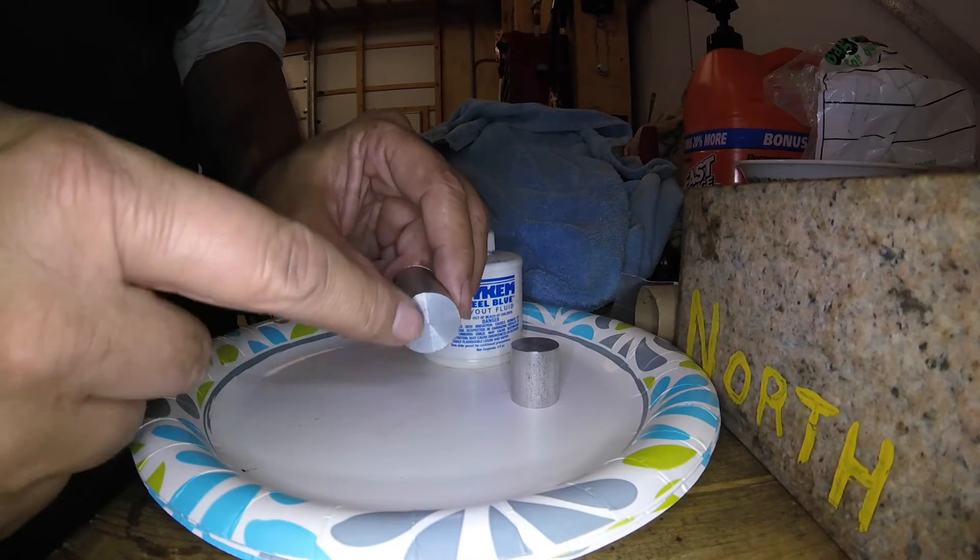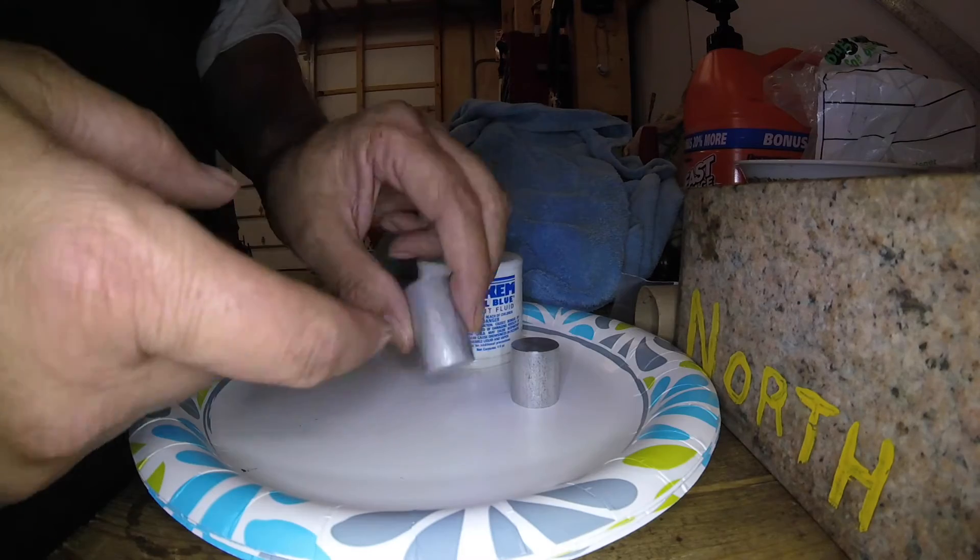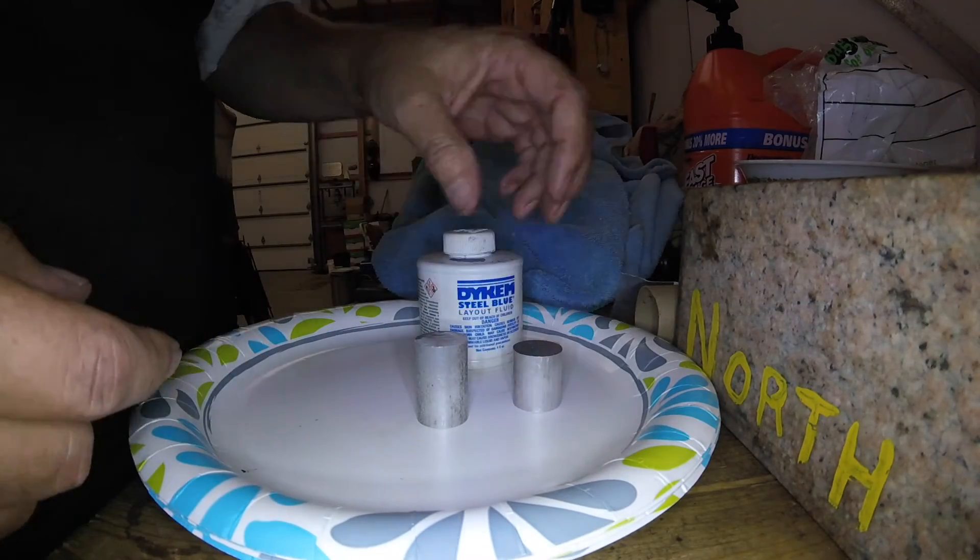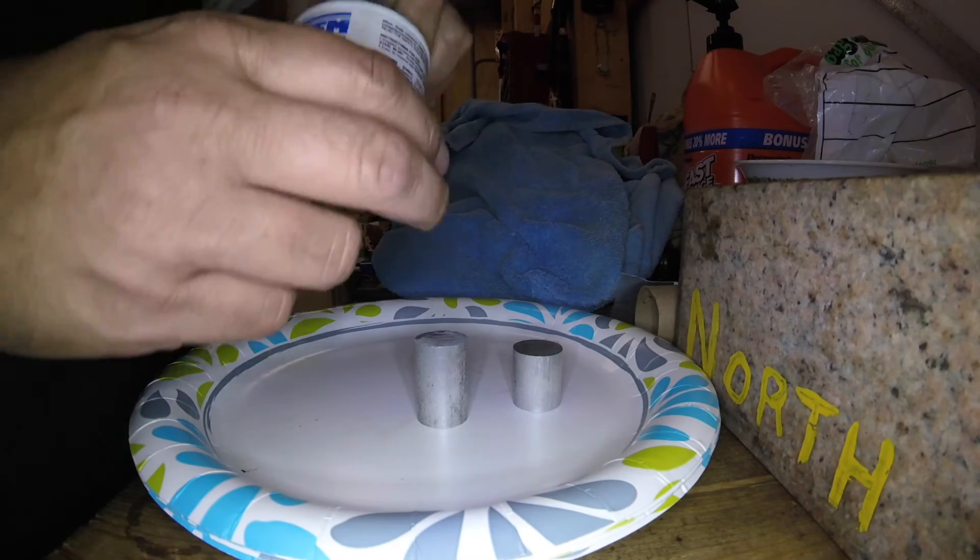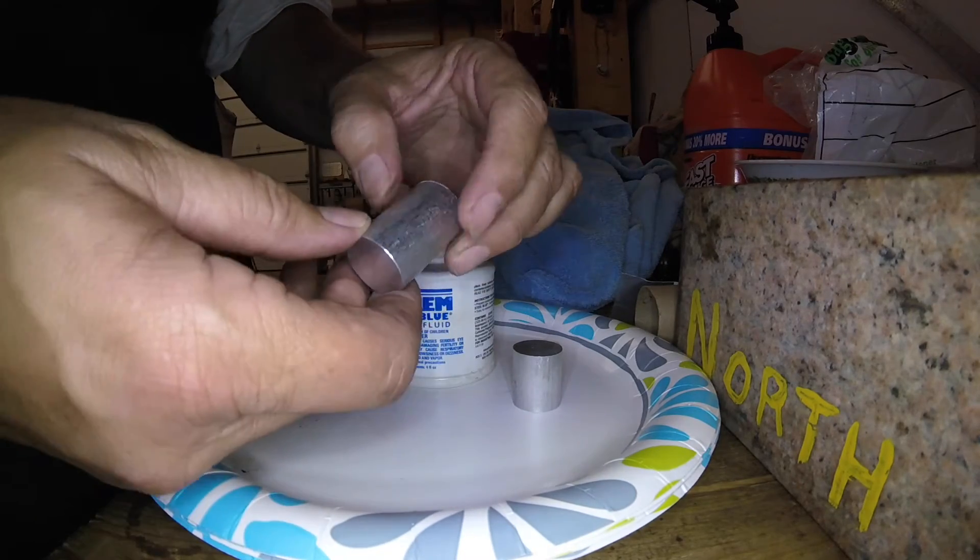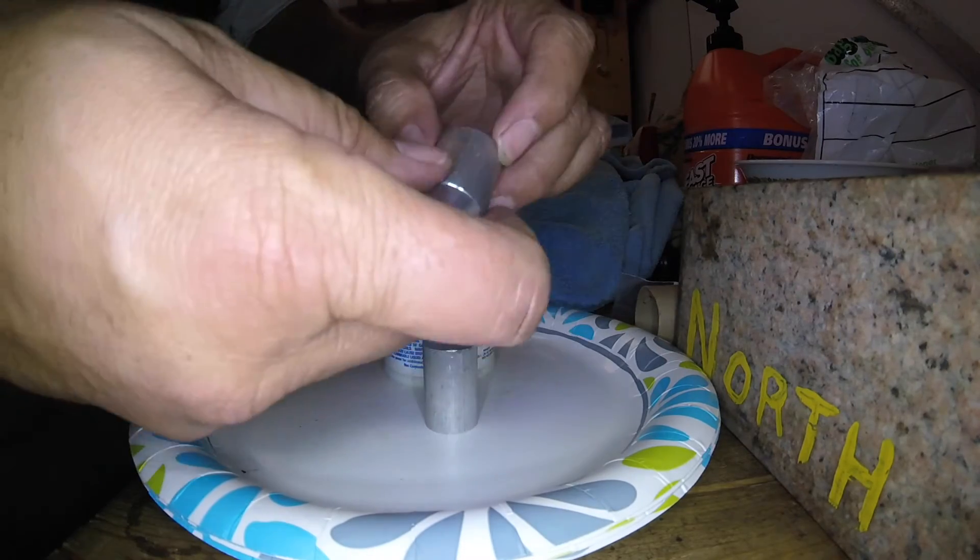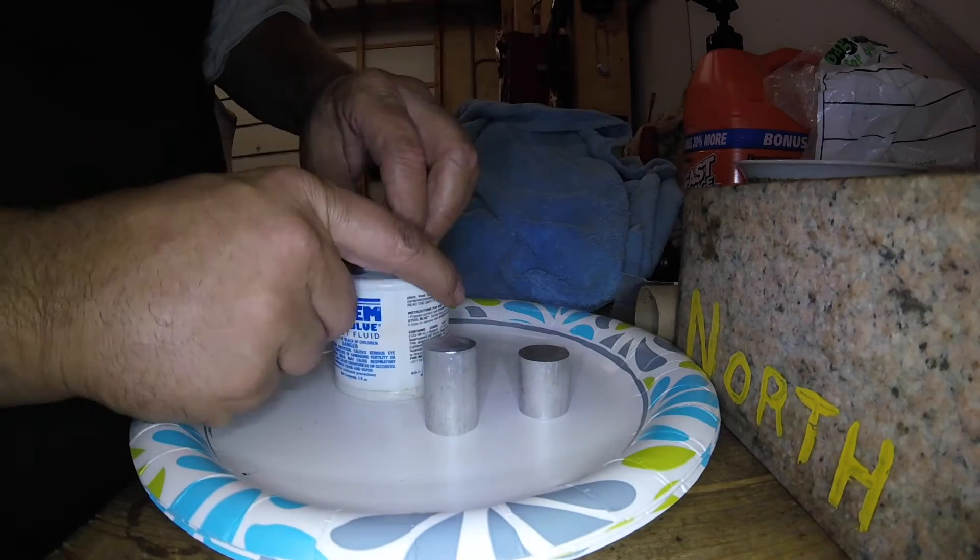I faced and chamfered the corners slightly on one end of each of these, and then what I'm going to do is take some dykem, mark it, put some dykem here and here, and then scribe a line at the appropriate heights.